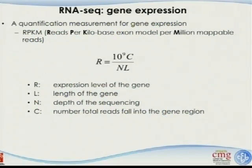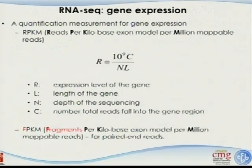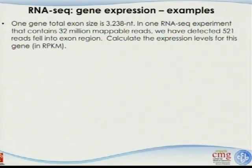You can see this measurement does two levels of normalization: first normalized based on the length of the gene — the longer the gene, the more signal you're supposed to detect — and also normalized based on the total number of reads in that sample. This is called RPKM. Later, with paired-end reads, people introduced FPKM — fragments per kilobase of exon model per million mappable reads. Basically they are the same thing: one for single-end, the other for paired-end.